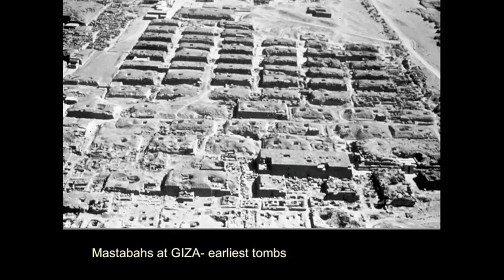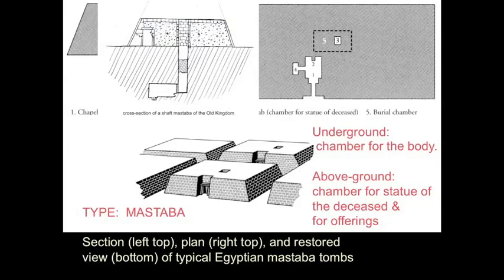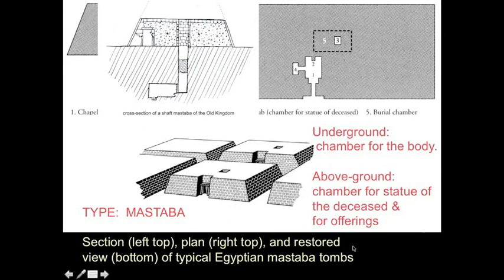Let's look at some mastabas. These are the bench-like tombs — flat, box-like things, haptic solids with little chambers inside. Here's a plan: there's a little chamber where offerings might be placed, but beyond that, there's a subterranean shaft that leads to the actual resting place of the tomb.